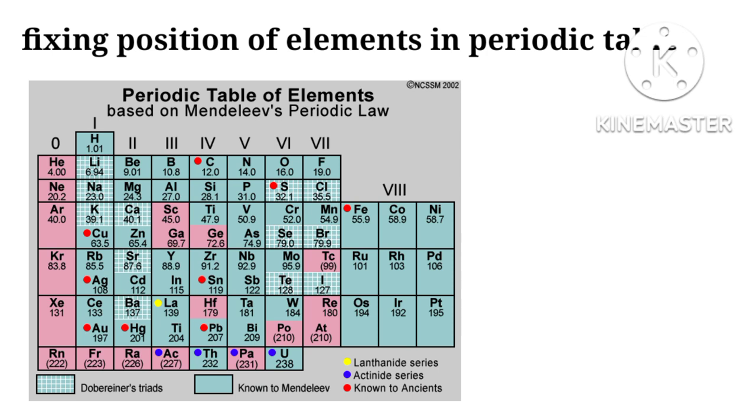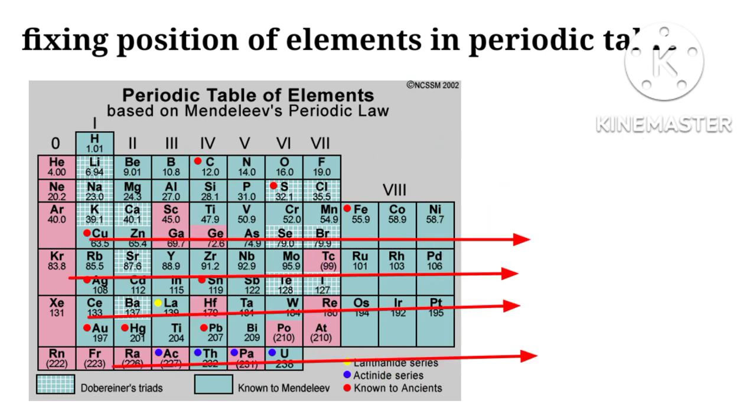Before we discuss variation of properties of elements, we refresh our memory with periodic tables. Mendeleev arranged elements in vertical columns and horizontal rows on the basis of their atomic masses. Vertical columns are called groups and horizontal rows as periods.